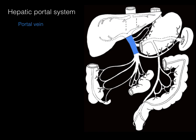The portal vein collects GI visceral blood — all the blood from the gut tube: foregut, midgut, and hindgut — as well as from the accessory digestive glands and the spleen.